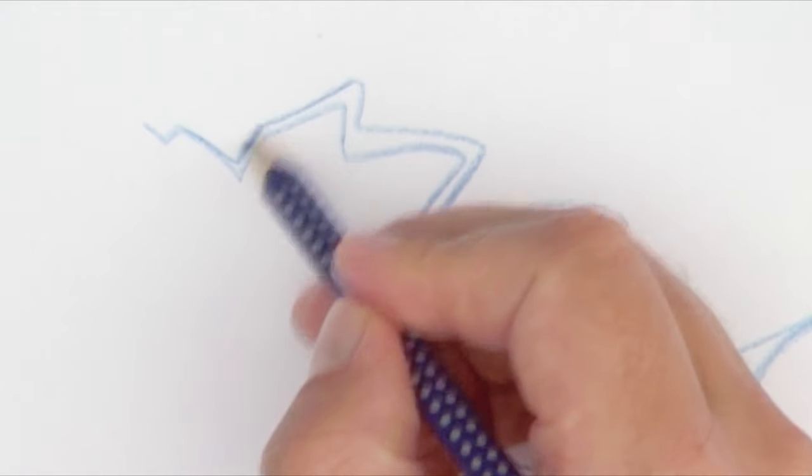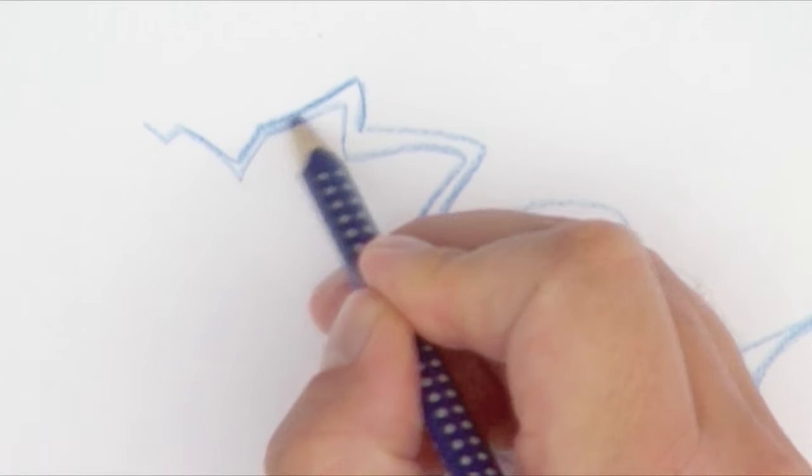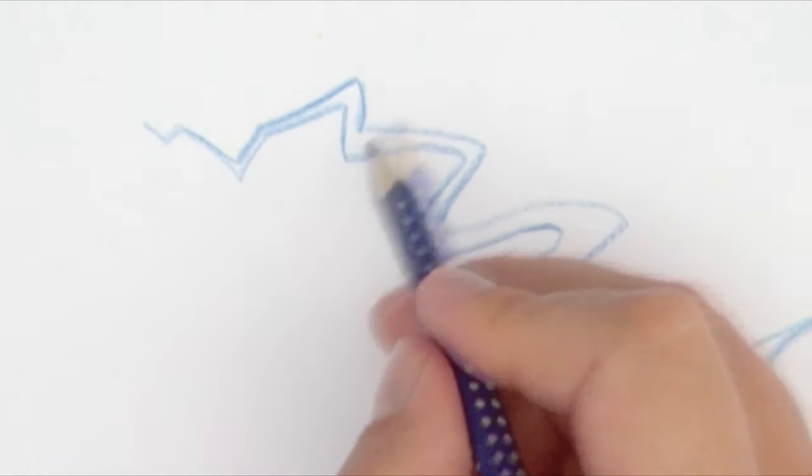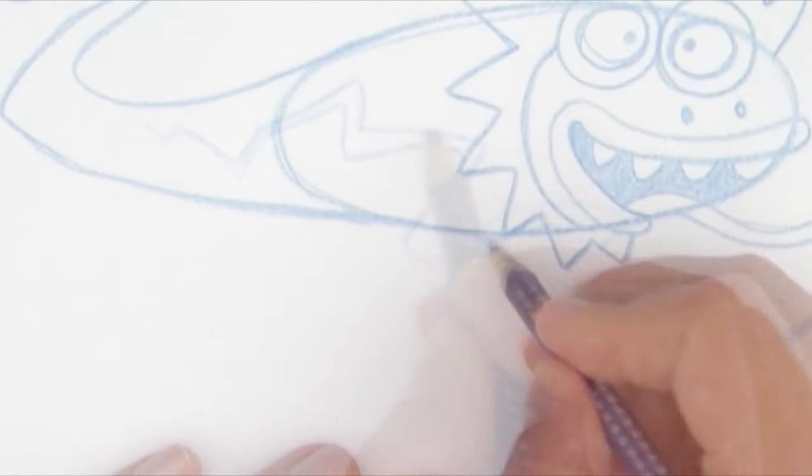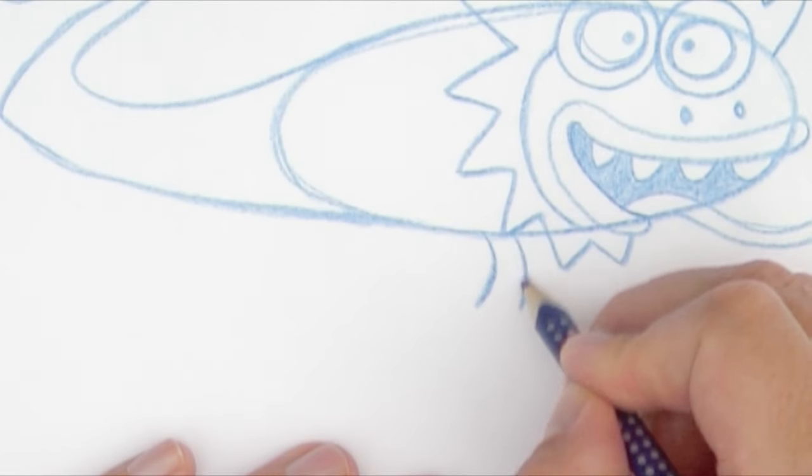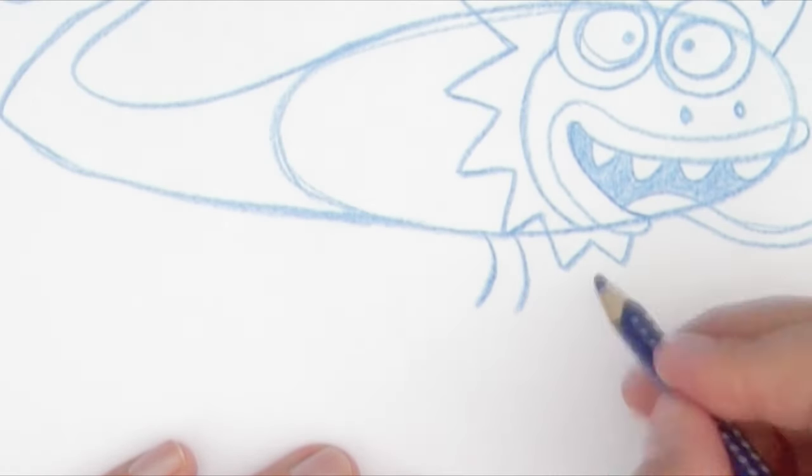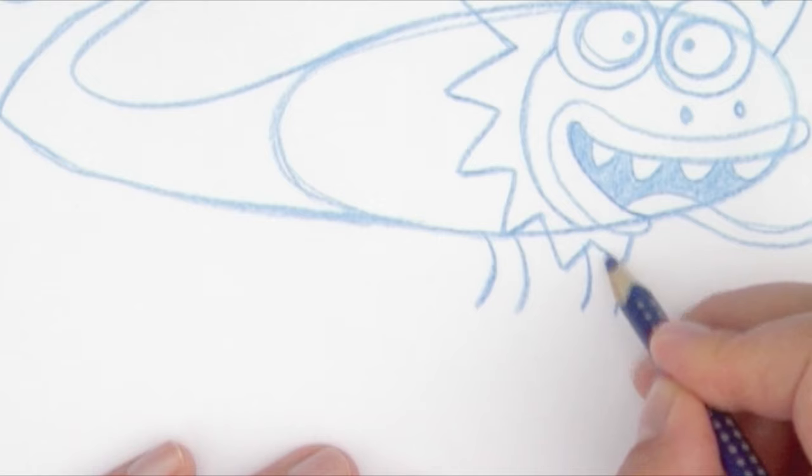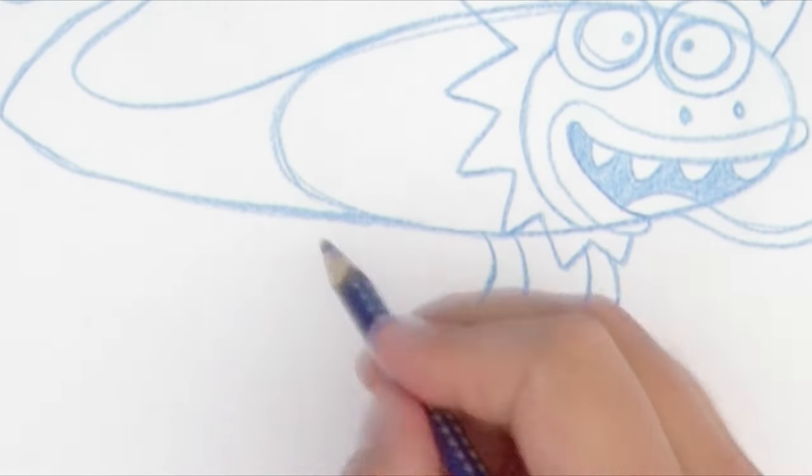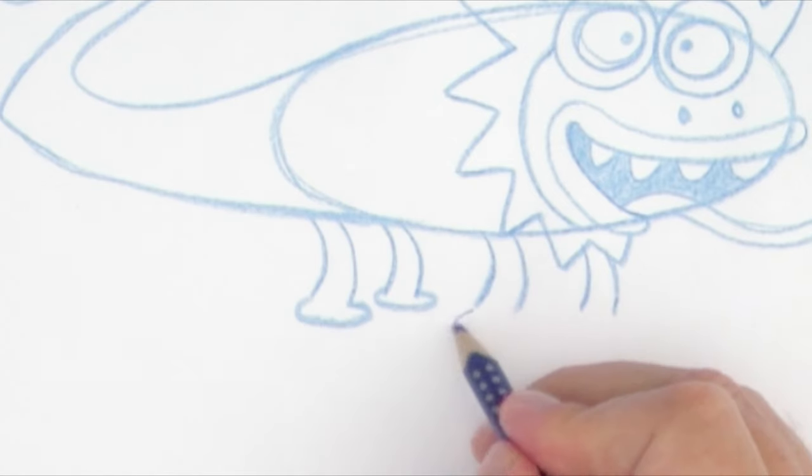Next I make the line a bit thicker so it's easier to see. After that I draw the legs. Two curved lines down becomes one leg, and I repeat that four times. At the end of each leg I draw a round foot.